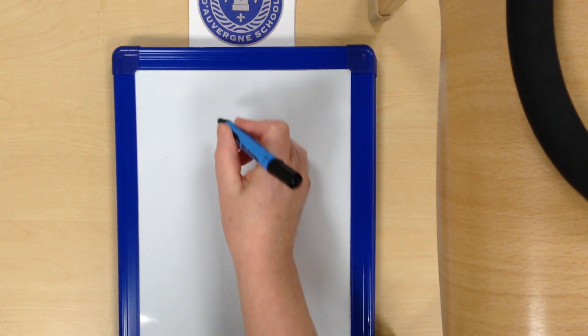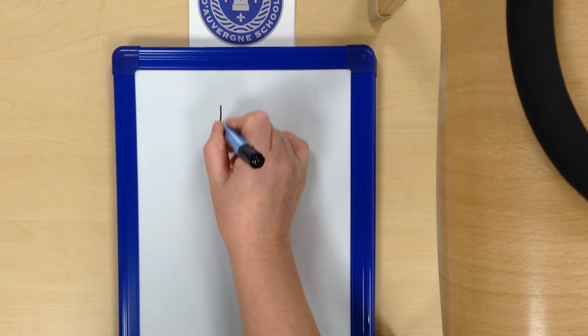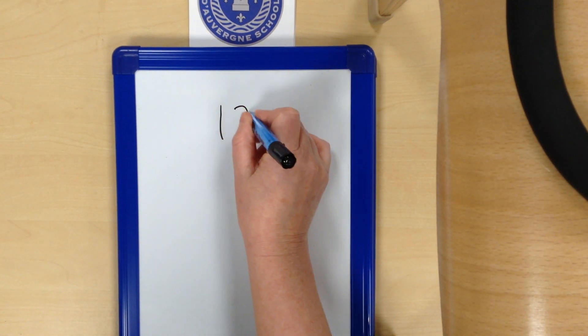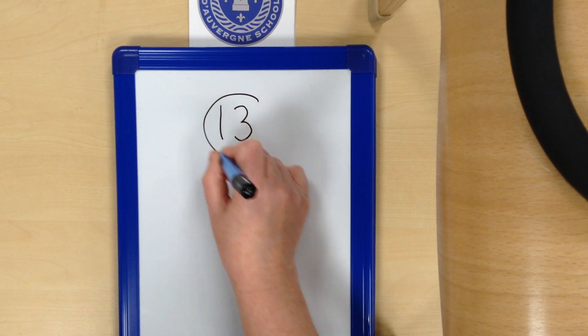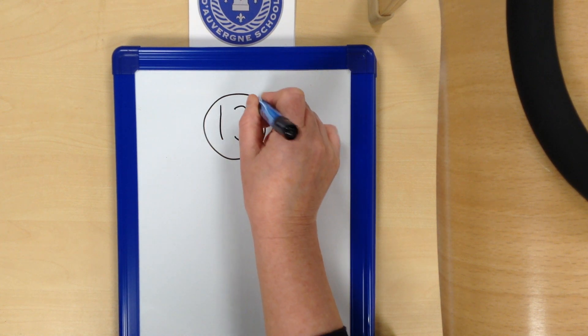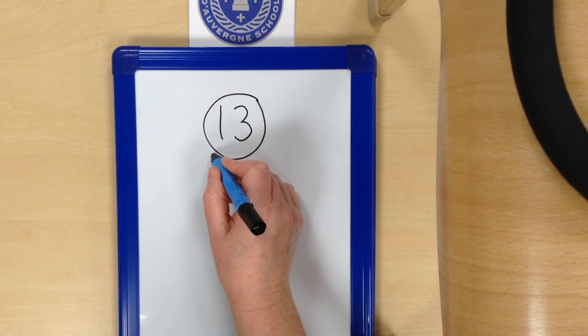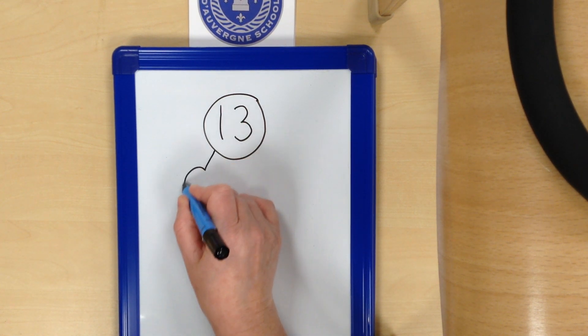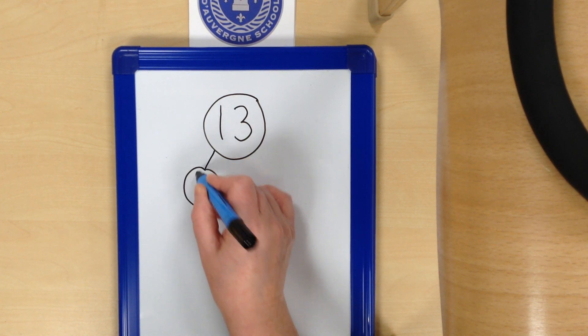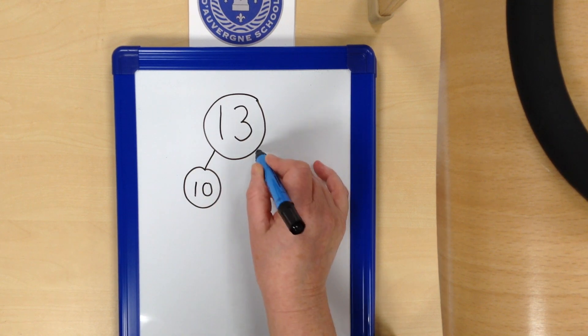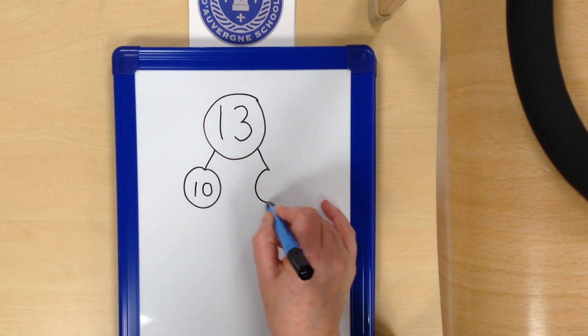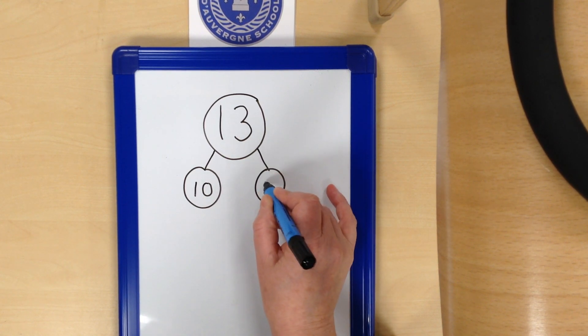This is our whole number, 13. This is made up of one 10 and three 1s.